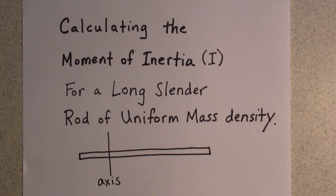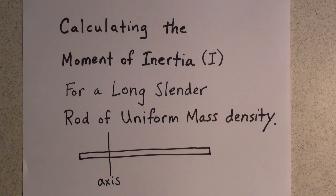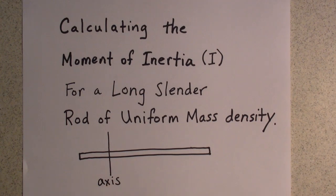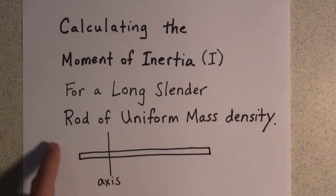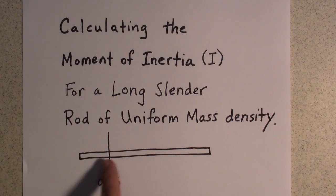Welcome to the first video of 2019. We're going to be calculating the moment of inertia for a long slender rod of uniform mass density. I'll show you how you can calculate it for any axis — whether the axis is in the middle, at the end, or even outside of this long slender rod.